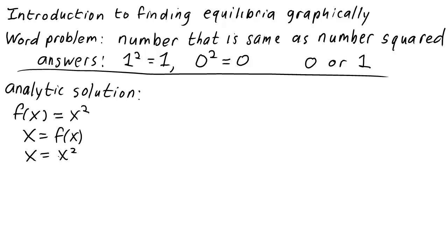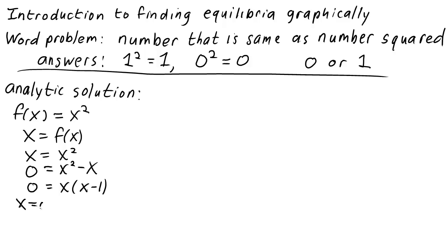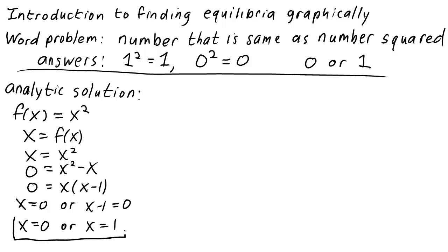Do you know how to solve this equation to find all possible values of x? We could subtract x from both sides so that one side is 0, getting 0 = x² - x. Next, we can factor by pulling out the common factor x. Our condition becomes 0 = x(x - 1). We have a product of two factors equal to 0, so either x = 0 or x - 1 = 0. Our possible answers are x = 0 or x = 1.